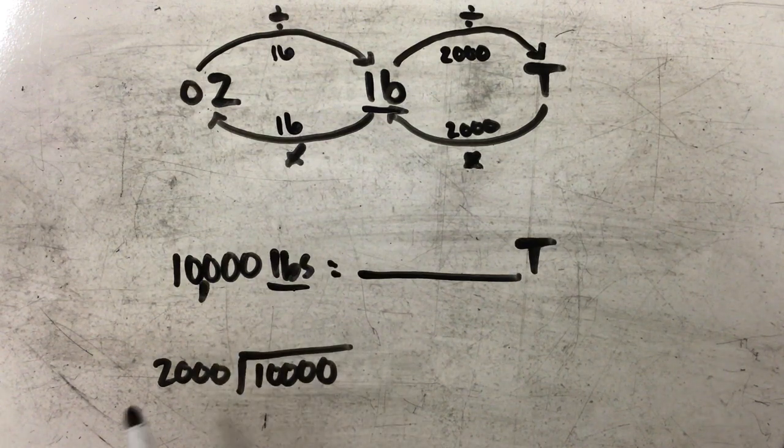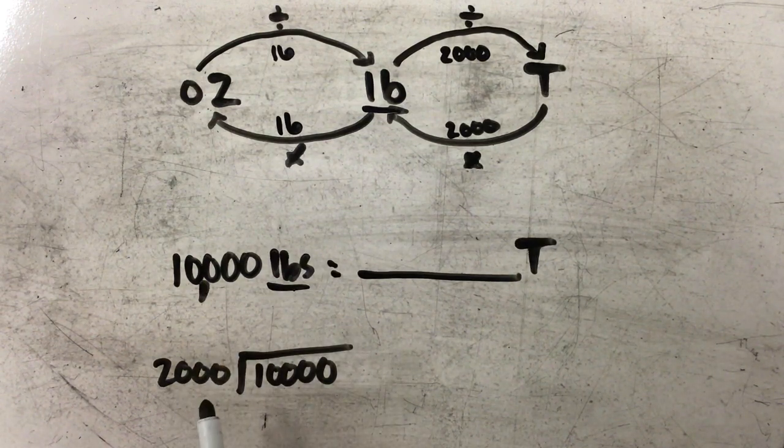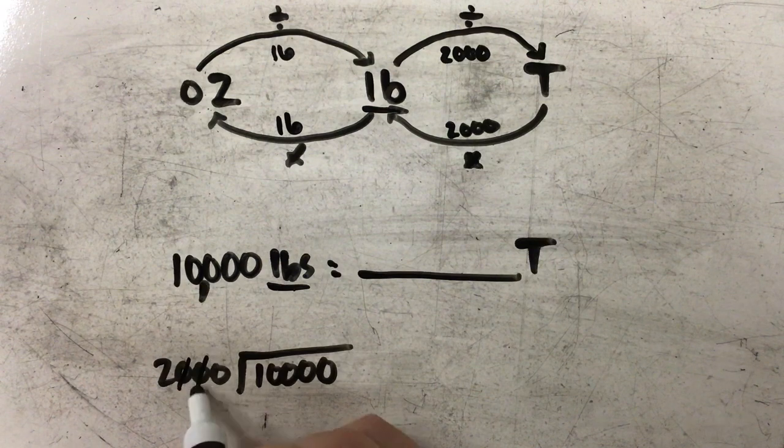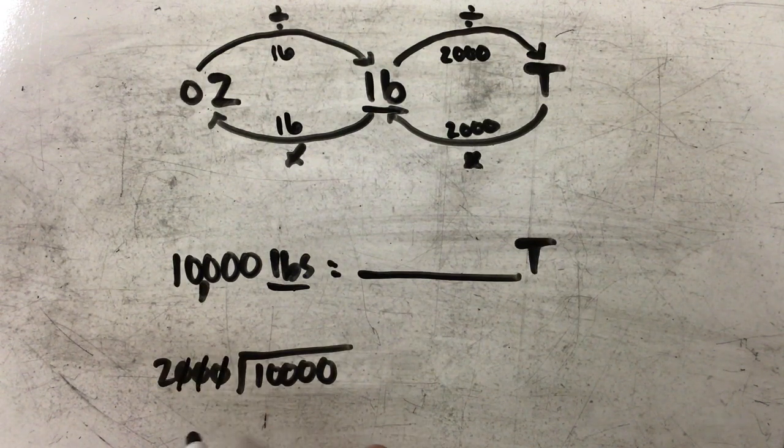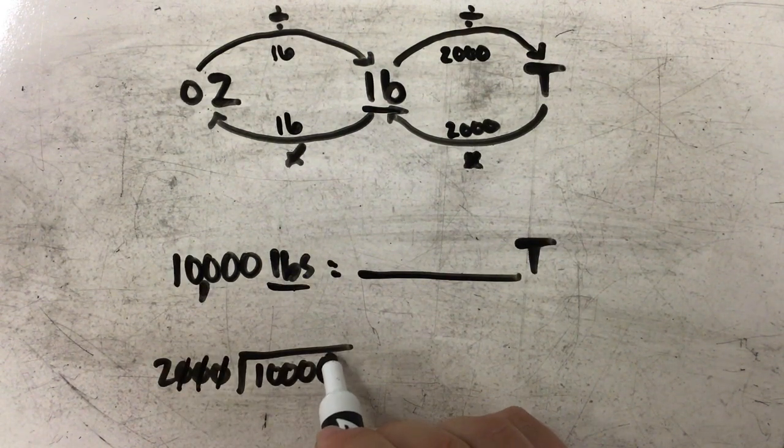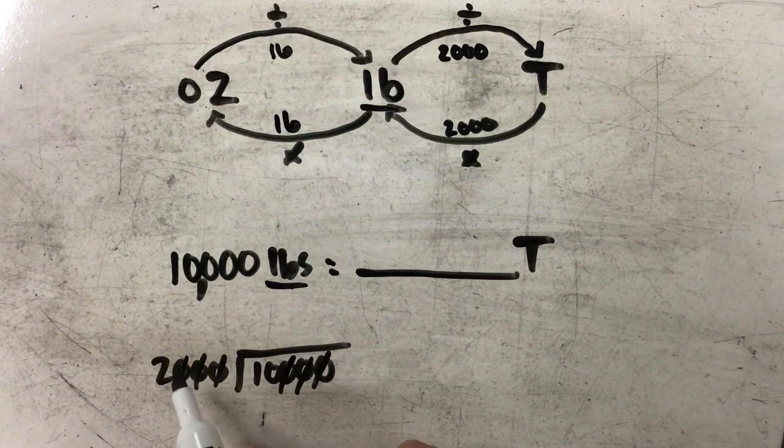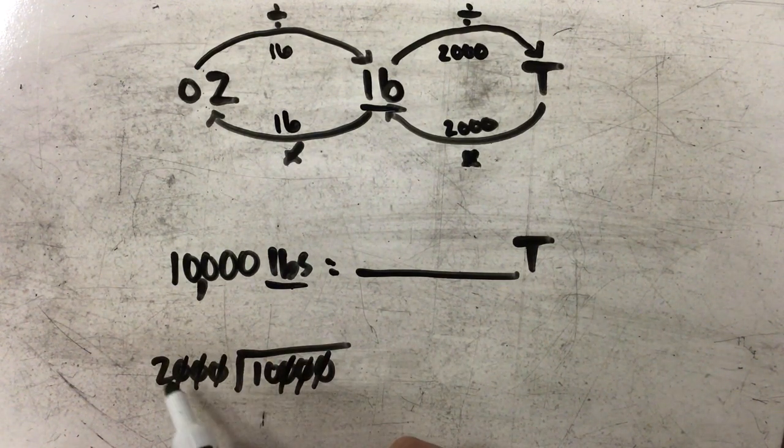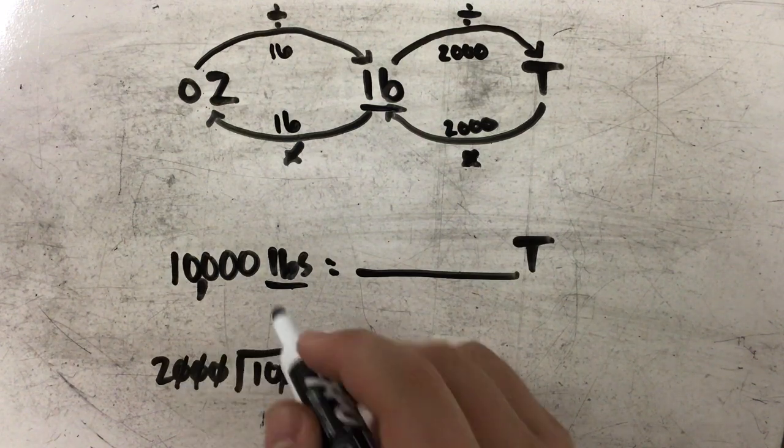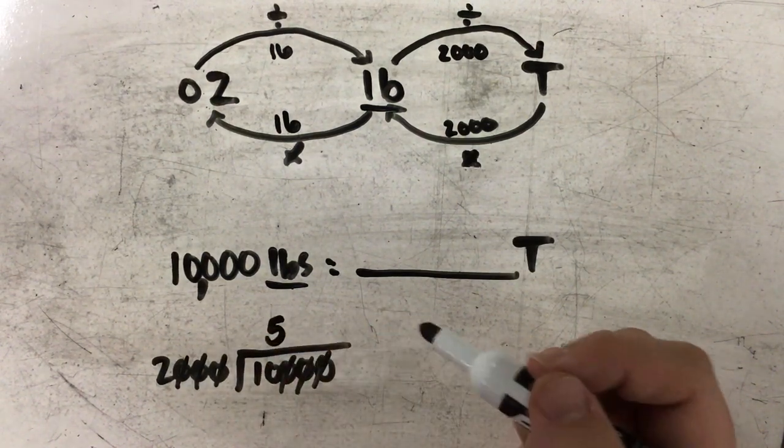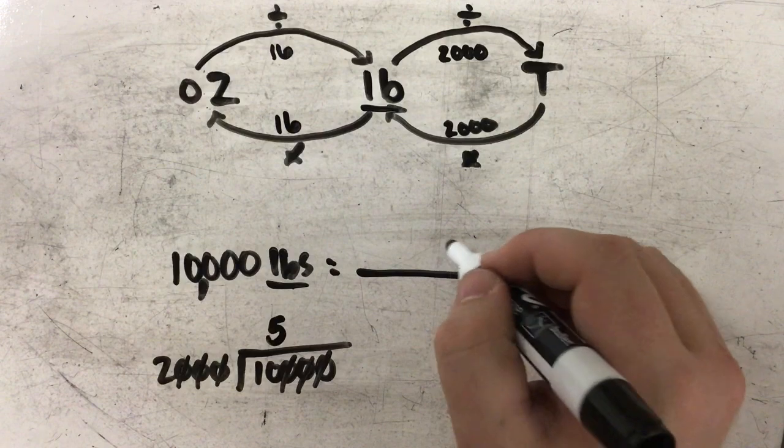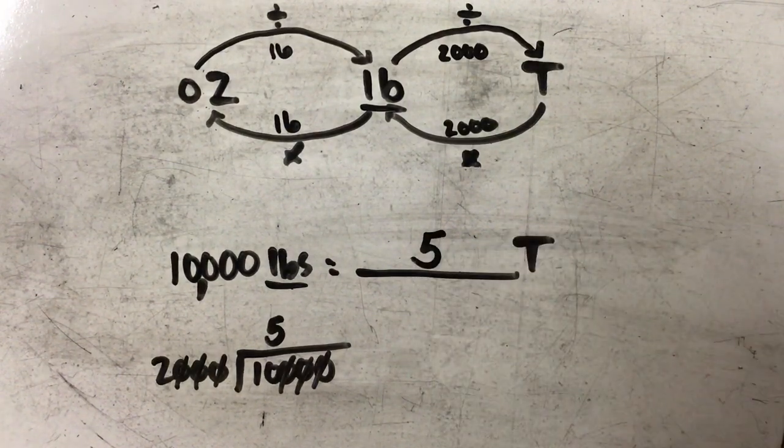As long as I cancel out the same number of zeros from each side in my division problem. So I have one, two, three zeros that I can cancel out over here, so I can cancel out one, two, three zeros on this side. And really all I have is this basic division problem, which is 10 divided by 2, which gives me 5. So 10,000 pounds is equal to 5 tons.